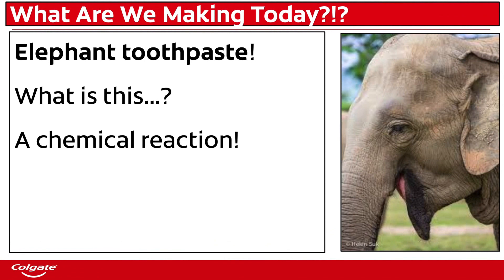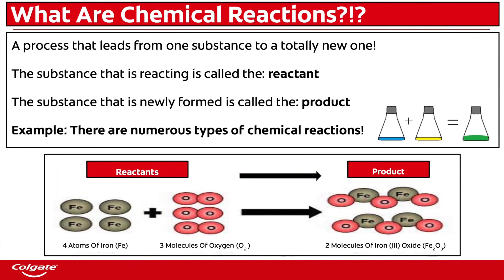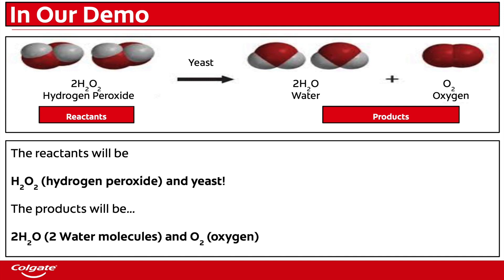What are we making today? Elephant toothpaste! Basically, we're going to be making a chemical reaction occur. A chemical reaction is a process that leads from one substance to a totally new one. The substance that is reacting is called the reactant, and the substance newly formed is called the product. For example, four atoms of iron and three molecules of oxygen can combine to form two molecules of iron oxide.